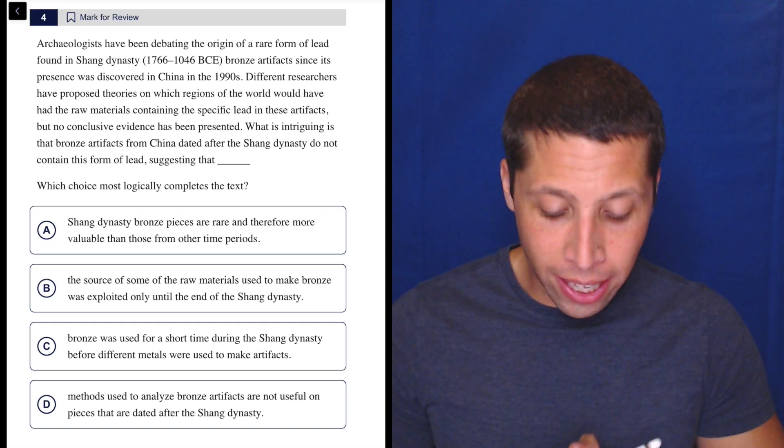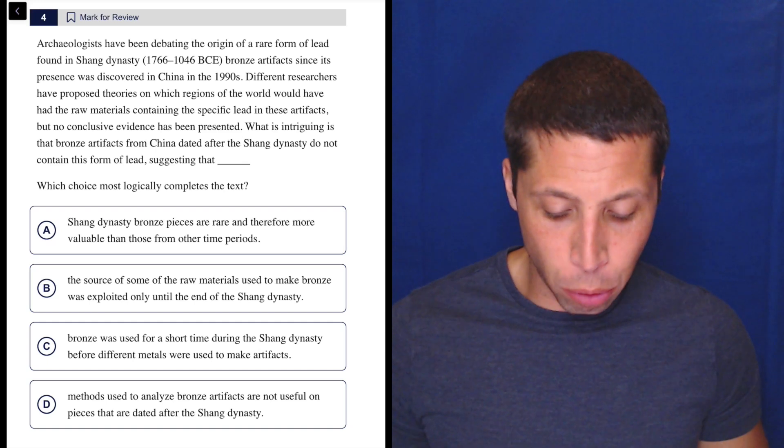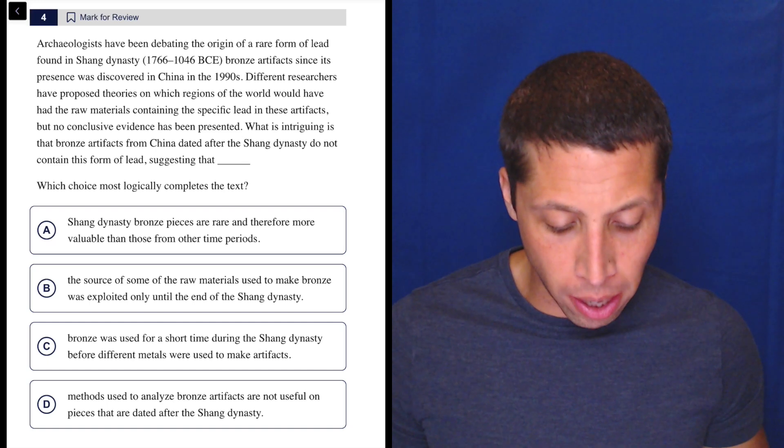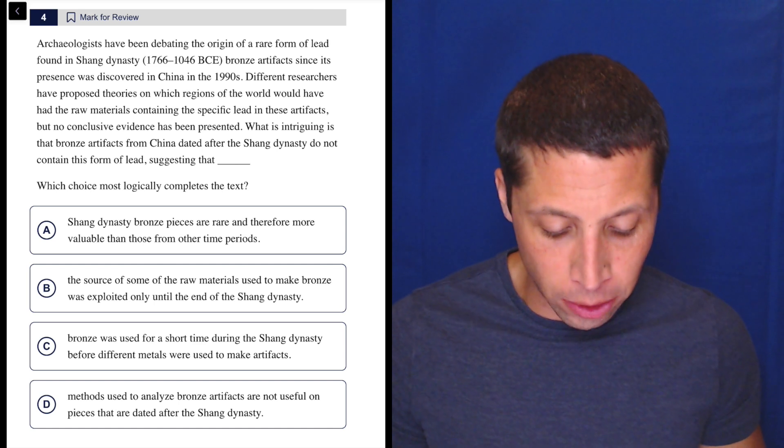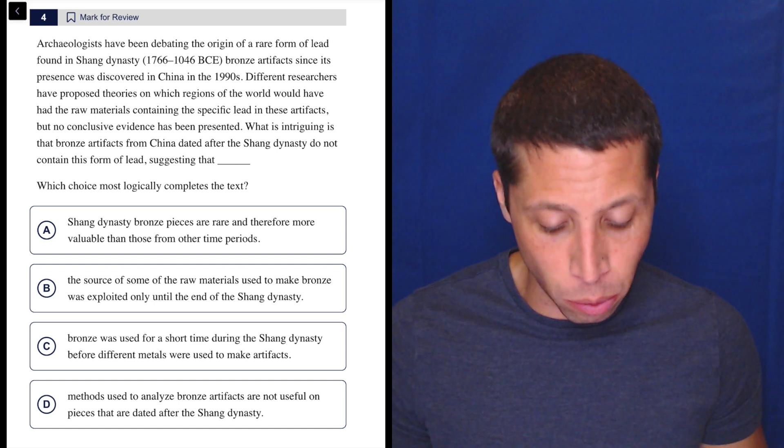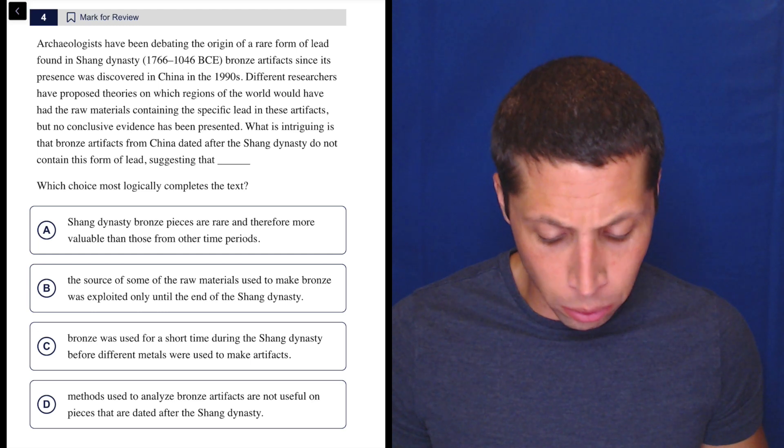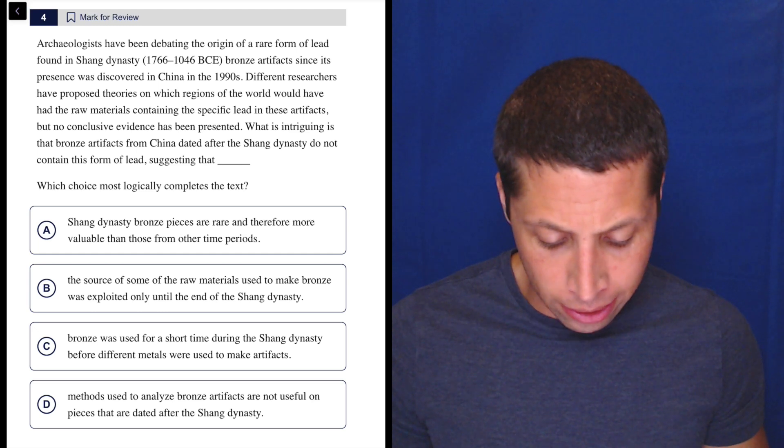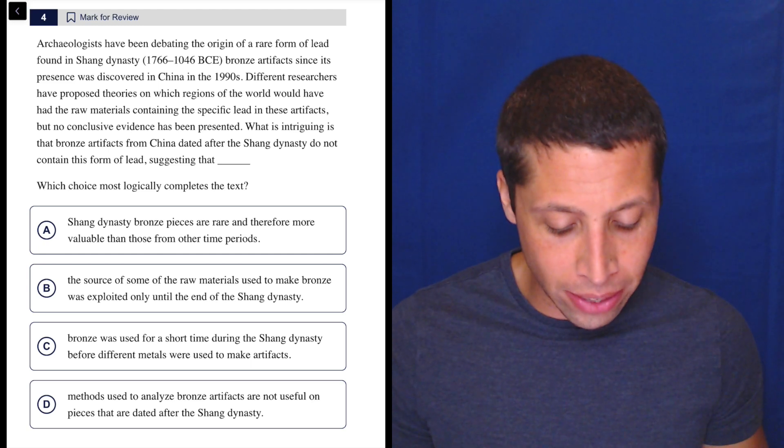Let's read the passage. Archaeologists have been debating the origin of a rare form of lead found in Shang Dynasty bronze artifacts since its presence was discovered in China in the 1990s. Different researchers have proposed theories on which regions of the world would have had the raw materials containing the specific lead in these artifacts. That's a weird sentence. But no conclusive evidence has been presented.